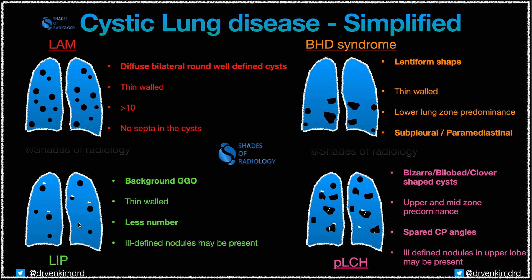Coming to LIP — lymphocytic interstitial pneumonitis — in this case you see few cysts which are less in number and again thin-walled. You can see some amount of background ground-glass opacities in LIP, and sometimes ill-defined nodules might be present. These are the features of LIP.